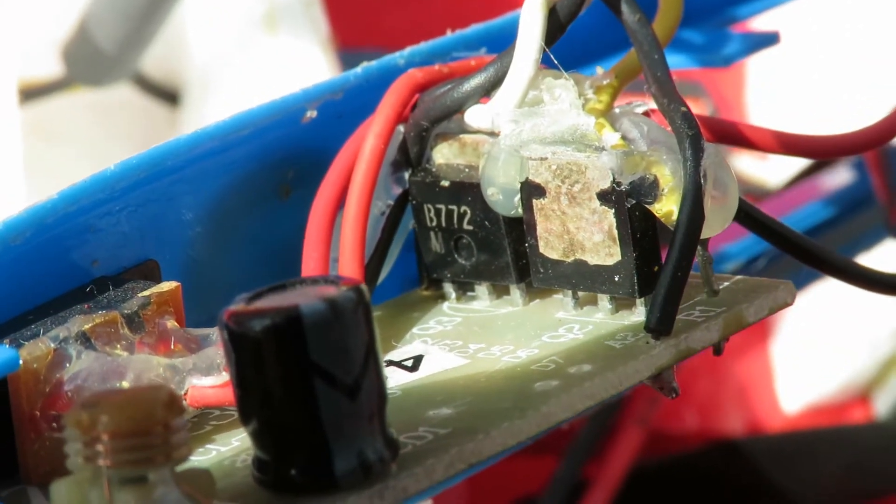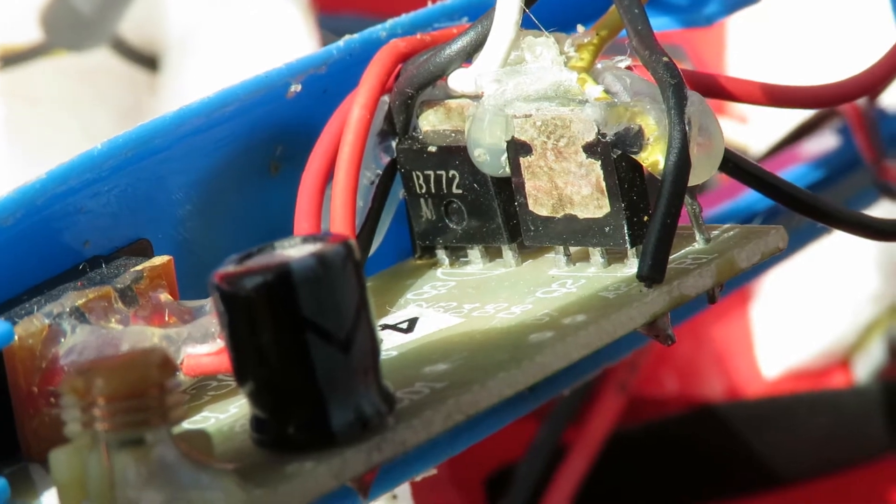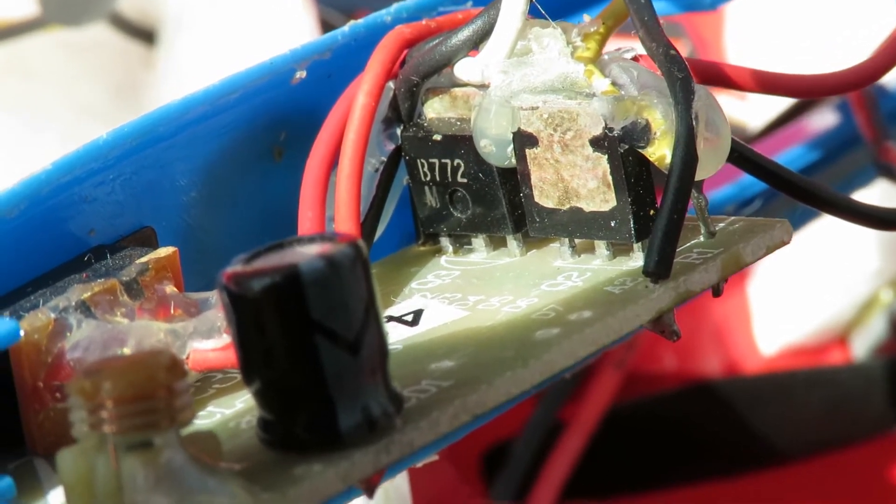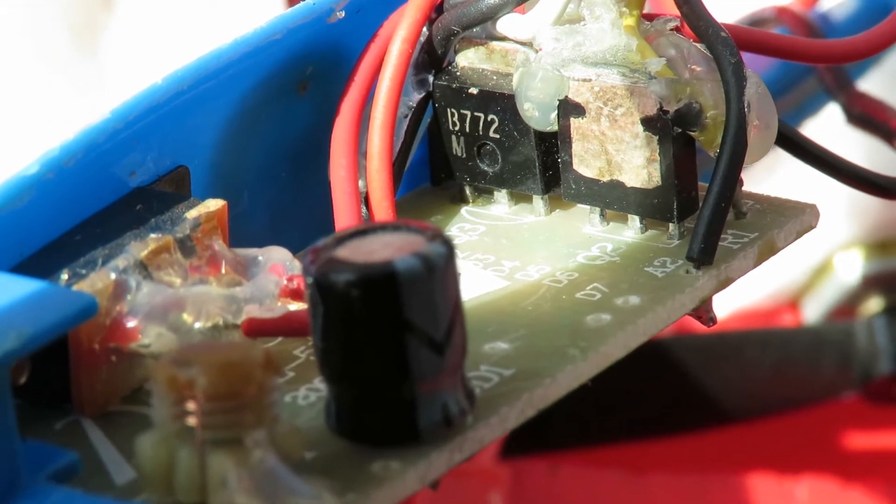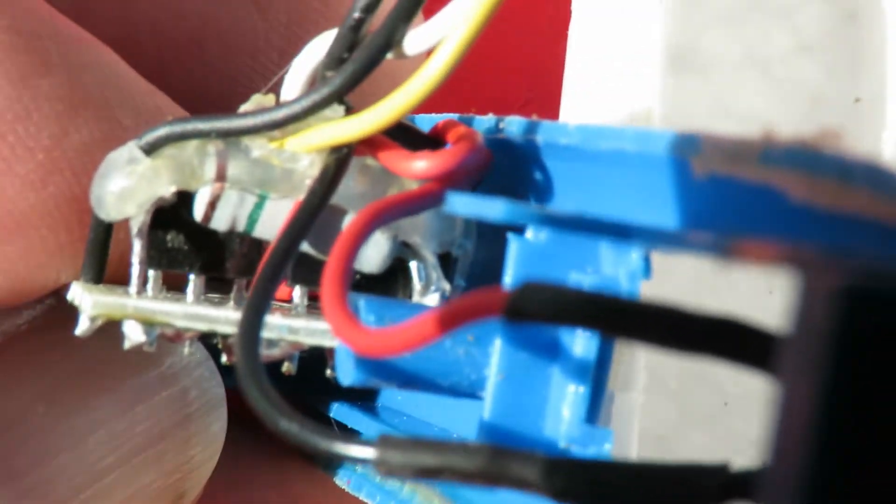It looks like we can see the number on one of them. Is that a B772? We can't see the other side it's covered in glue.